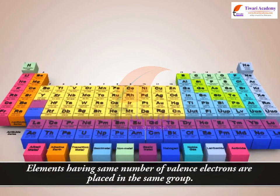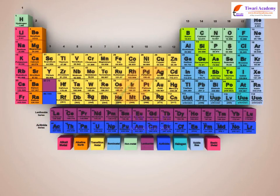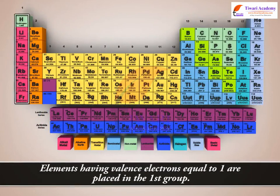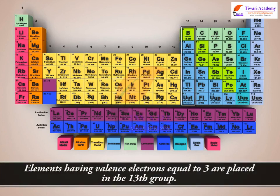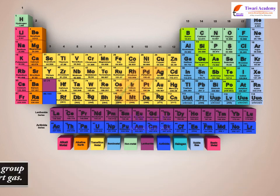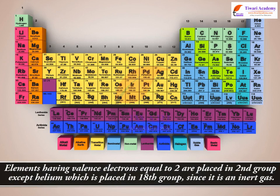Elements having the same number of valence electrons are placed in the same group. For example, elements having valence electrons equal to 1 are placed in the first group. Elements having valence electrons equal to 3 are placed in the 13th group, except Helium, which is placed in the 18th group since it is an inert gas.